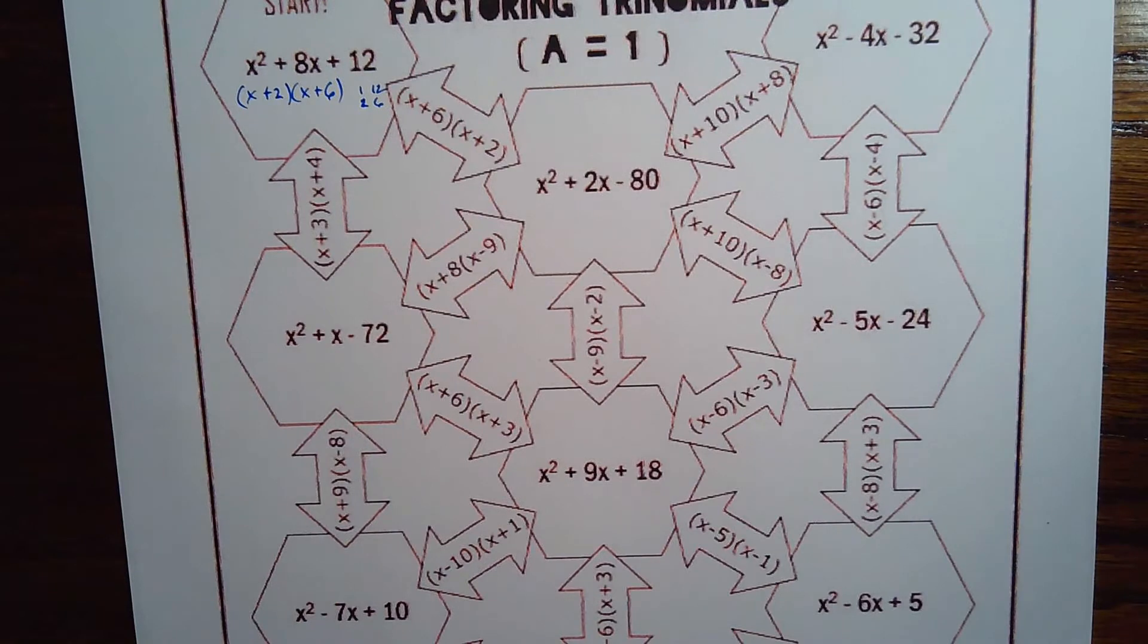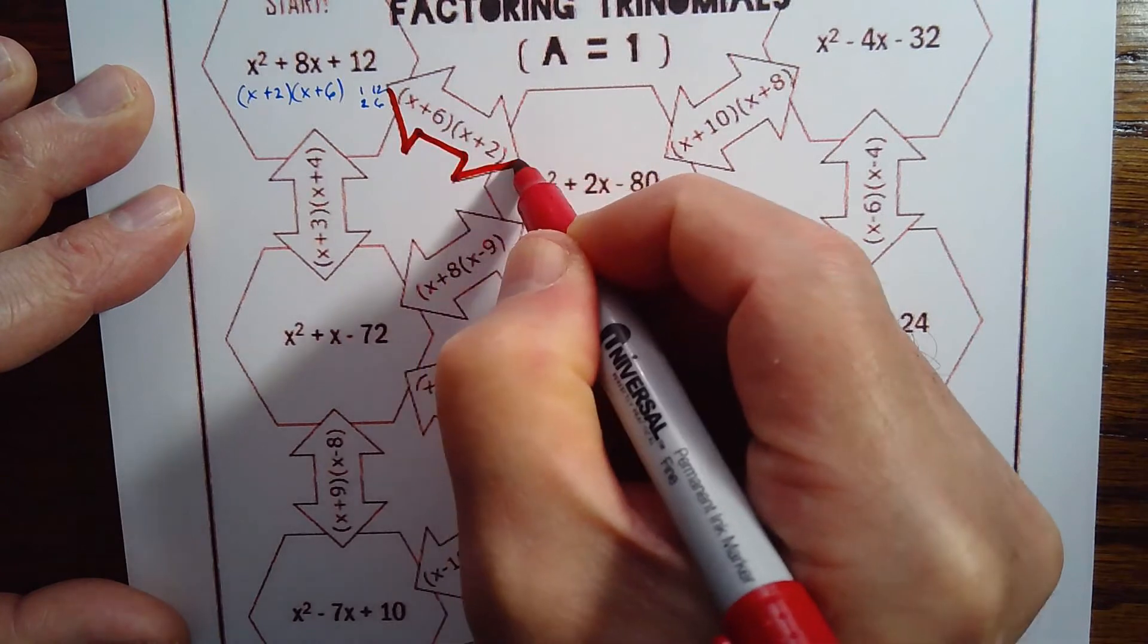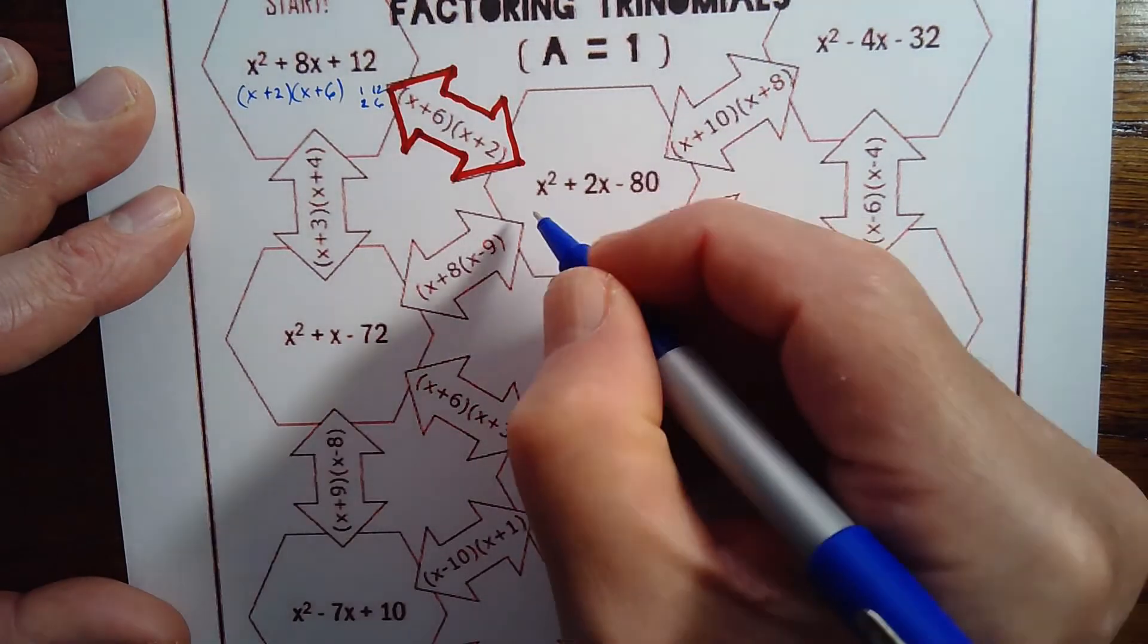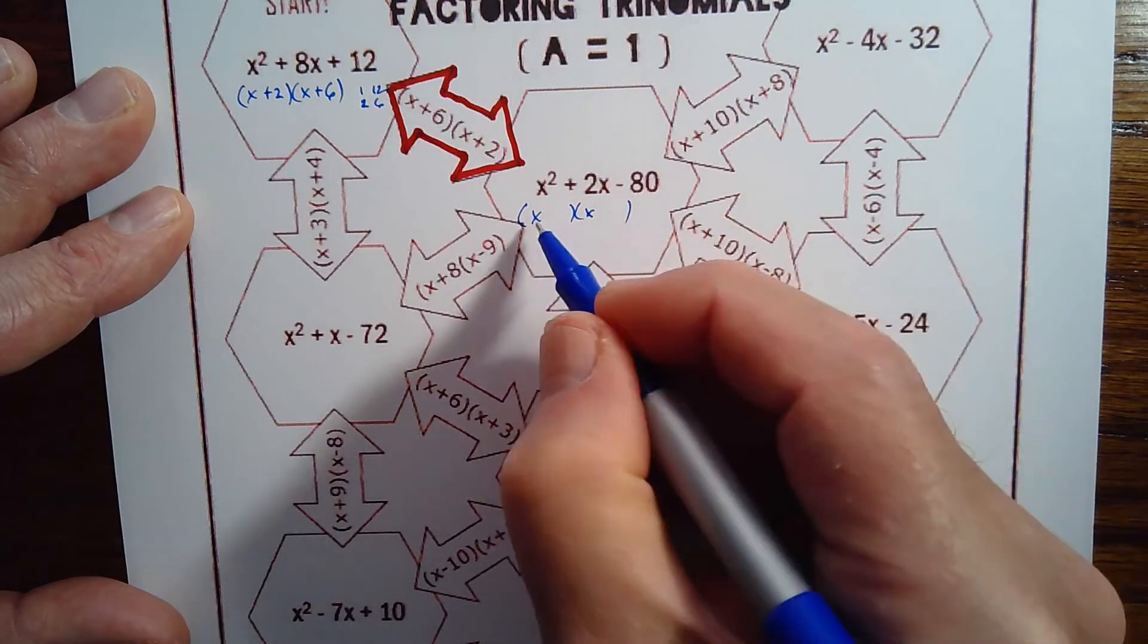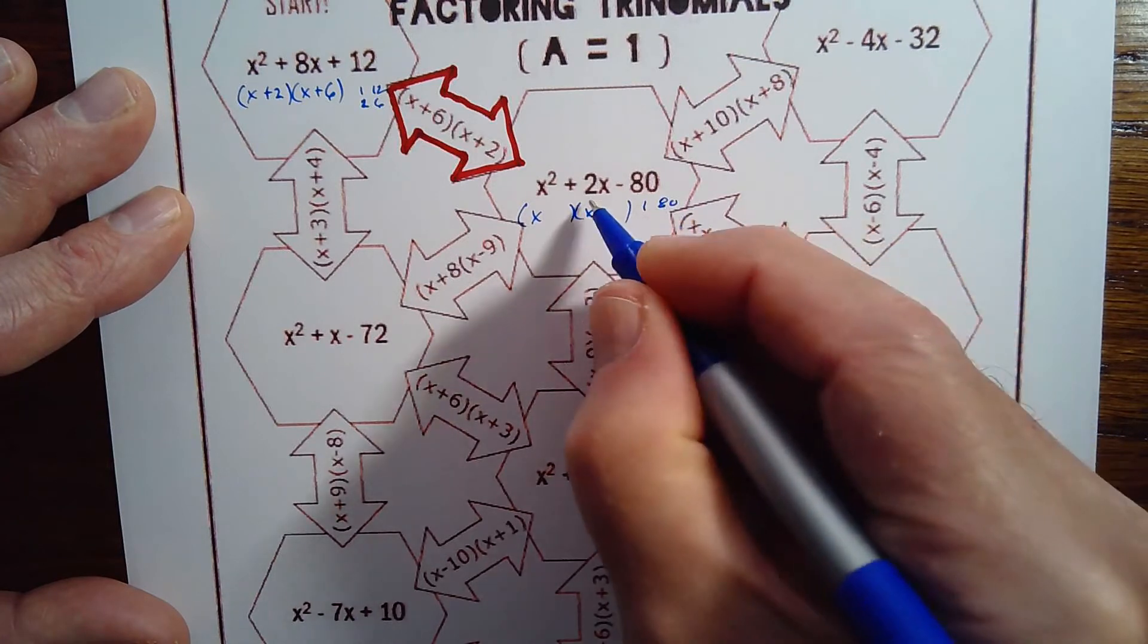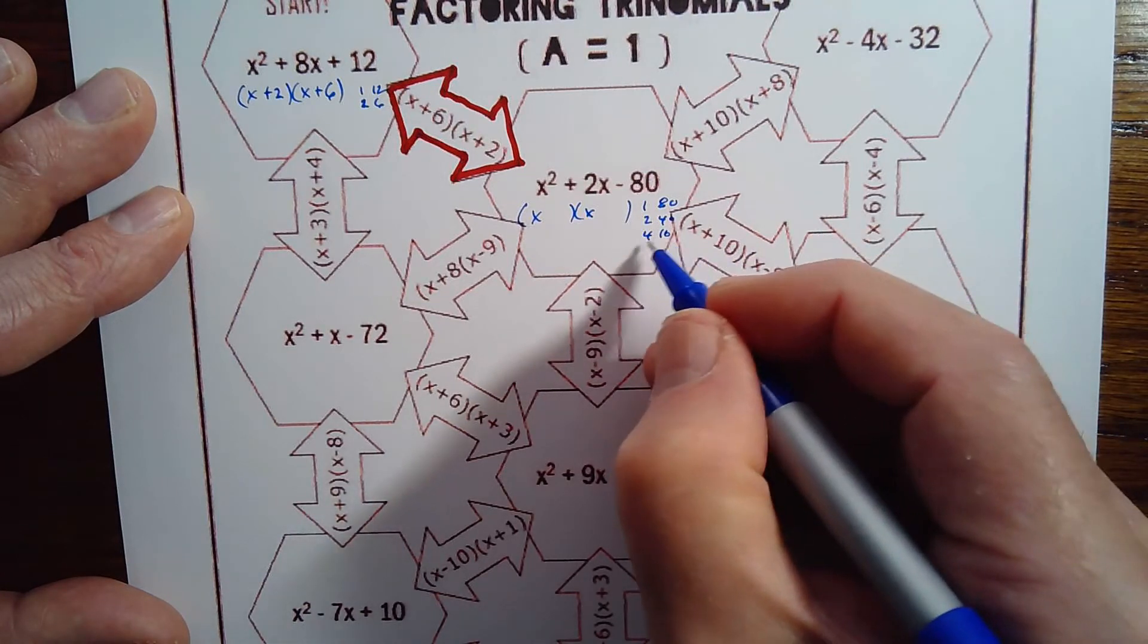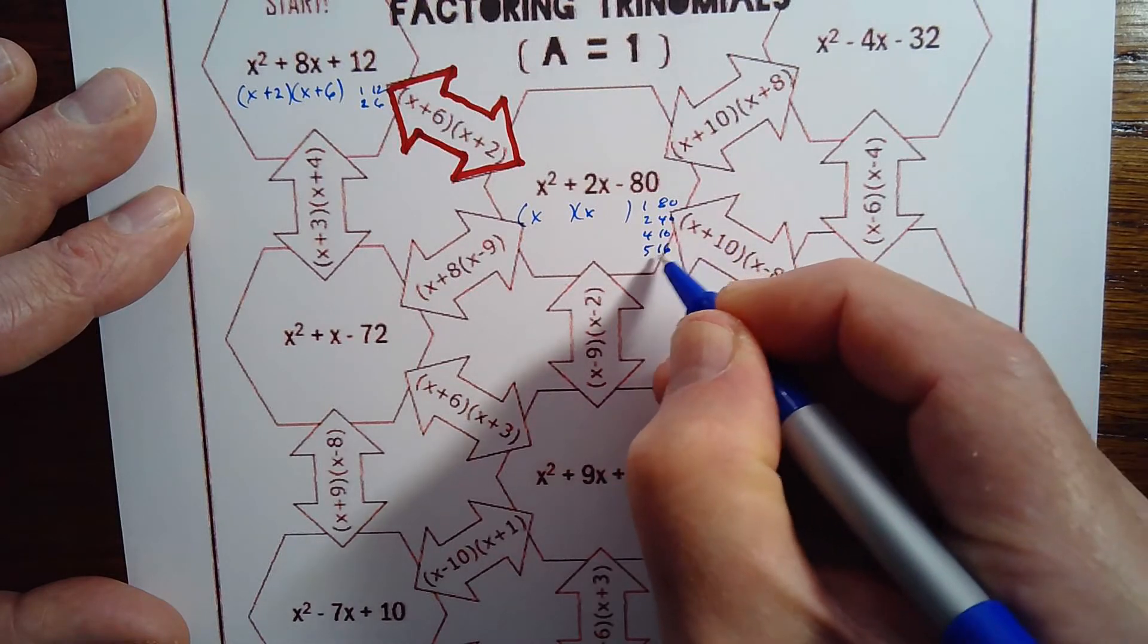Alright, so I'm heading down here to this x² + 2x - 80. Again, I'll start with my two x's in my first spots. And now I'm doing 1 and 80, does that make 2? No. 2 and 40? No. 3 doesn't go in there. 4 and 10, they're getting closer, they're 14 or 6 apart, and then 5 and 16, that's not going to work. 6 doesn't go in there, 7 doesn't go in there.